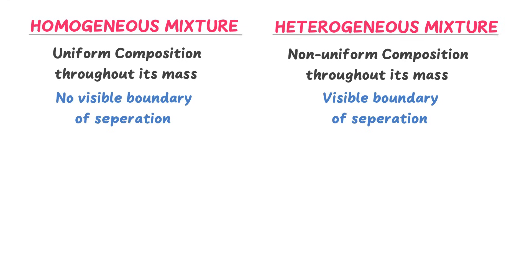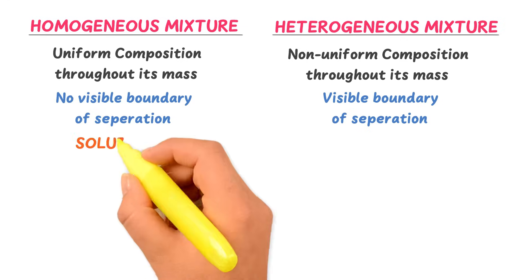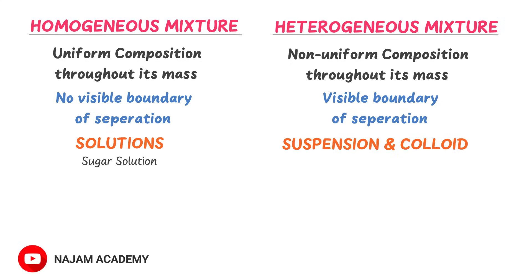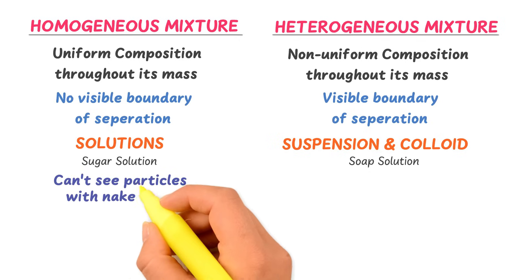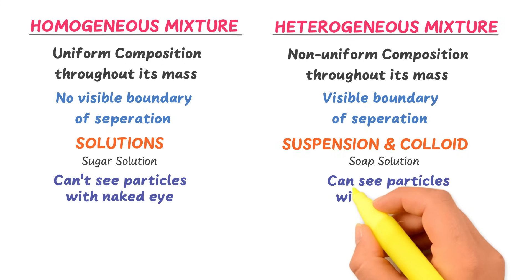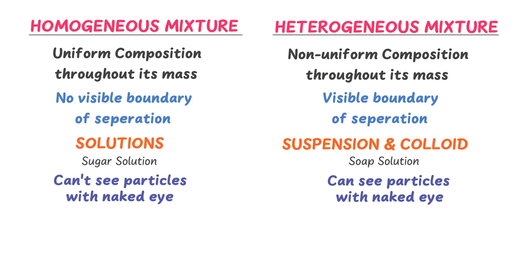Thirdly, all homogeneous mixtures are called solutions — for example, sugar solution and salt solution. While all suspensions and colloids are called heterogeneous mixtures — for example, soup solution. Fourthly, we cannot see particles in a homogeneous mixture with the naked eye, while we can see particles in a heterogeneous mixture with the naked eye.